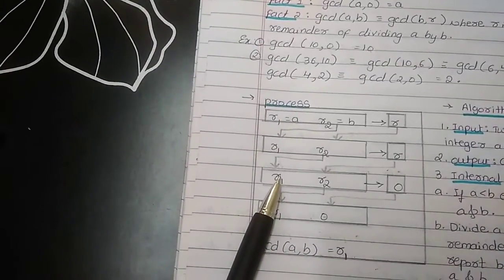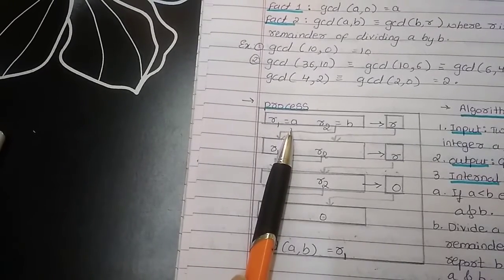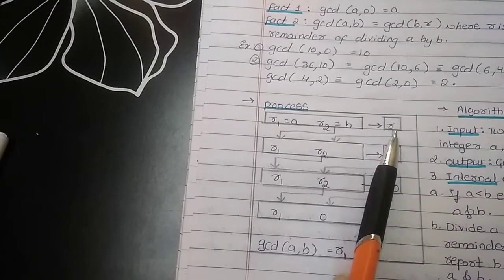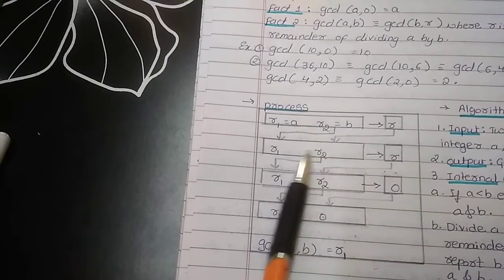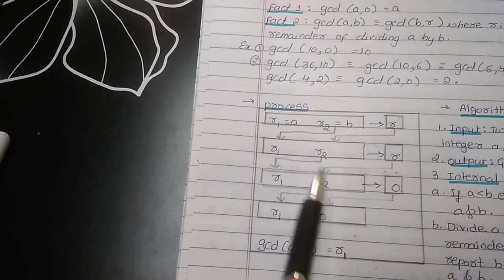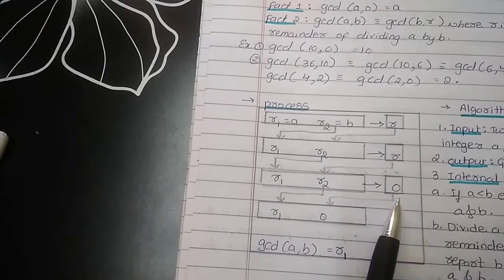If we see the Euclidean algorithm in the form of process, R1 will be the value of A, R2 is the value of B and R is the remainder. After computing, R2 will become R1 and R will become R2. And this process is repeating until we are getting the remainder as 0.